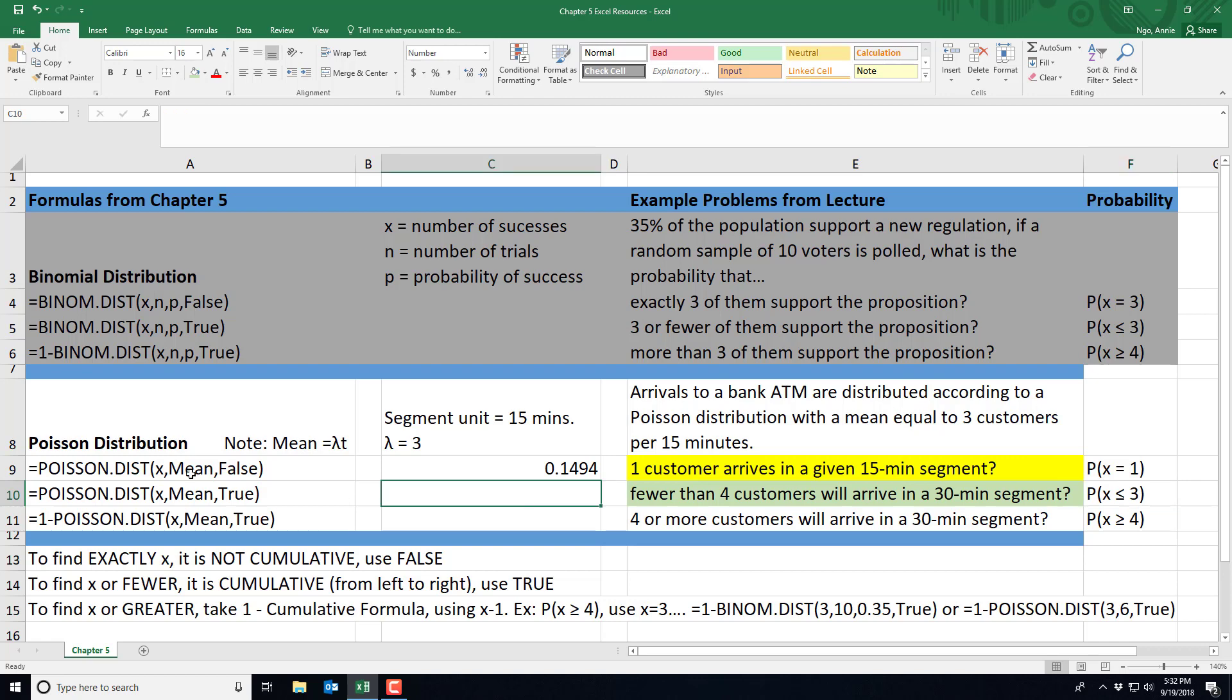We'll go ahead and use this formula right here for our cumulative. We're reading from left to right of 0 up to 3 customers coming. So I'll type in equals POISSON. I can double click so it finishes typing my function for me. My x is 3. Remember this is my x that I set up right here in my probability because I want the probability of 3 or less.